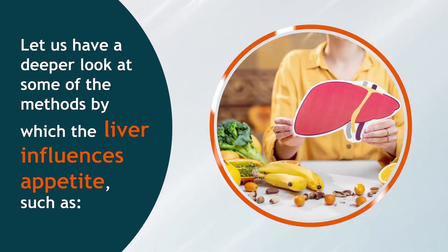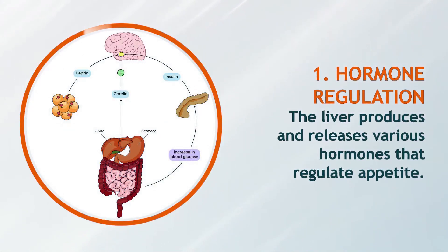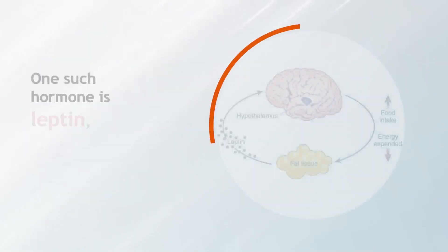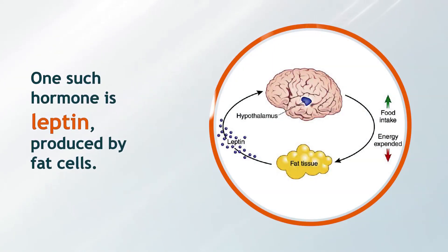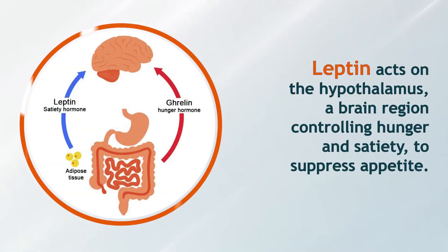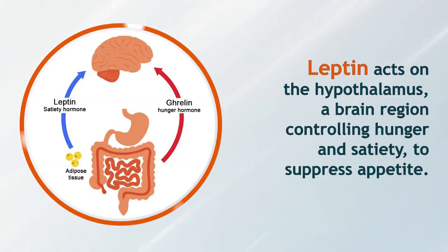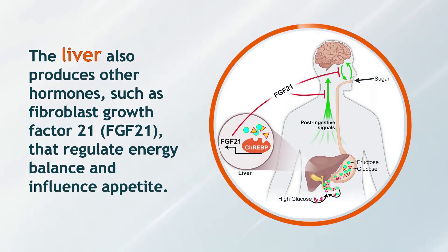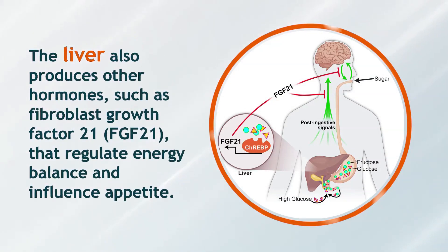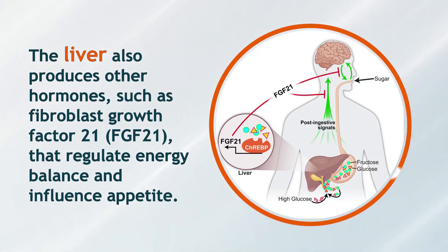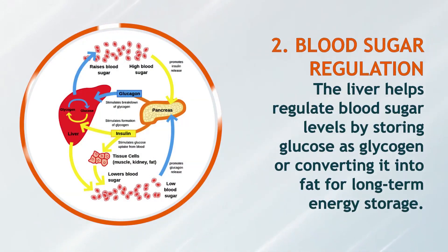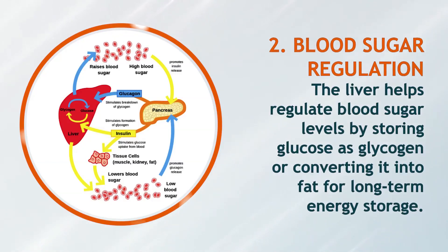One method by which the liver influences appetite is hormone regulation. The liver produces and releases various hormones that regulate appetite. One such hormone is leptin, produced by fat cells. Leptin acts on the hypothalamus — a brain region controlling hunger and satiety — to suppress appetite. The liver also produces other hormones such as fibroblast growth factor 21 (FGF21) that regulate energy balance and influence appetite.